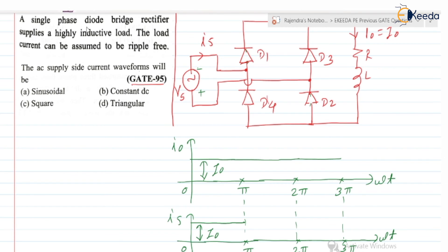And diodes D3, D4 will be in the conduction mode. So current will be flowing from Vs, D3, load D4 and again back to the Vs. Means in this loop the current will be flowing. So definitely the current in the circuit is I0.